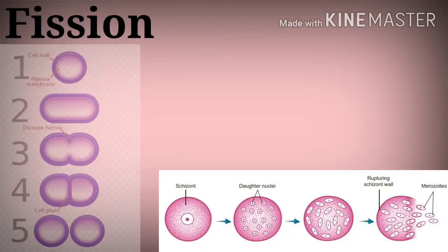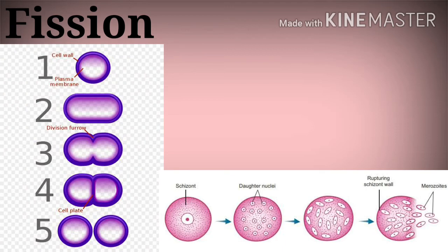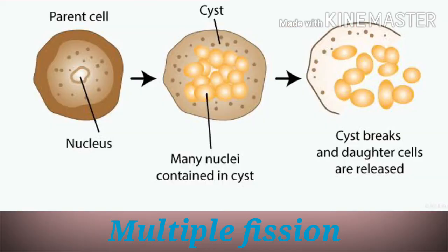Fission is a mode of asexual reproduction in which a parent undergoes division to form two or more individuals. In binary fission, two individuals are formed from a single parent. Examples include bacteria, yeast, and amoeba.